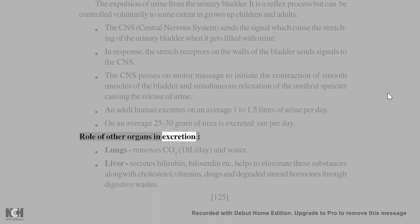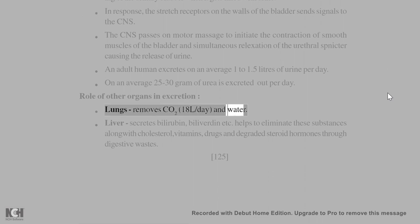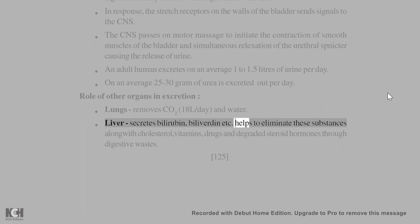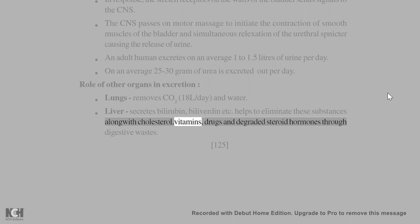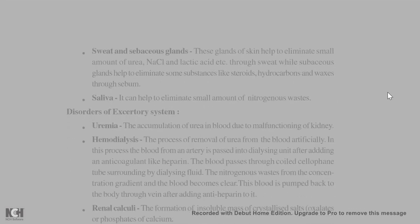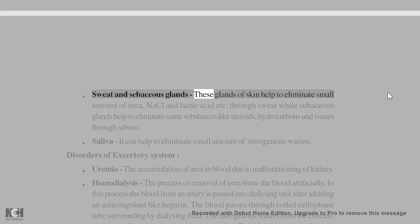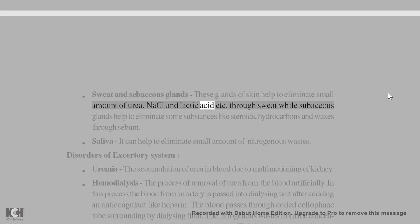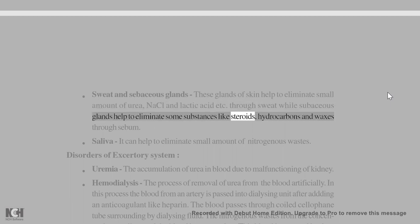Role of other organs in excretion: Lungs — remove CO2 (18 L/day) and water. Liver — secretes bilirubin, biliverdin, and helps eliminate cholesterol, vitamins, drugs, and degraded steroid hormones through digestive wastes. Sweat glands — help eliminate small amounts of urea, NaCl, and lactic acid through sweat. Sebaceous glands — eliminate substances like steroids, hydrocarbons, and waxes through sebum.